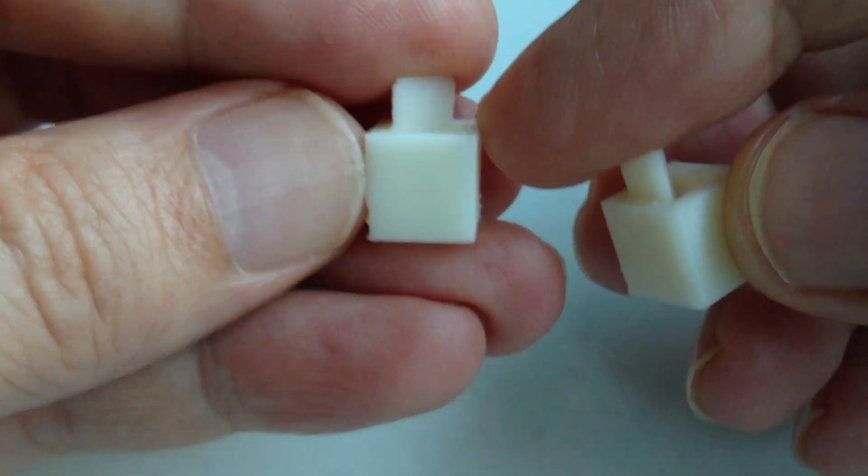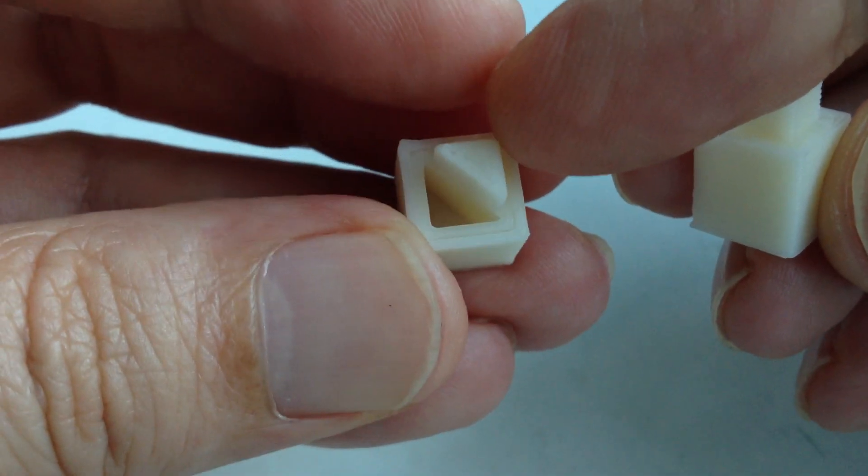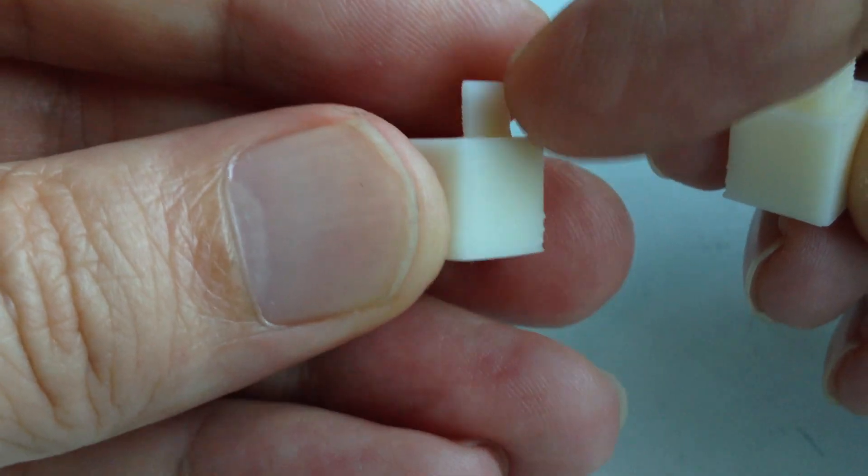The bottom half is a one centimeter cube and then there's a triangular hole on one side and a triangular peg on the other.